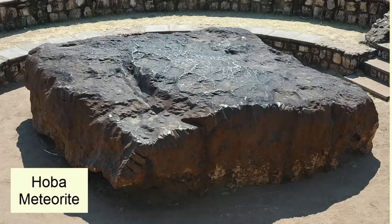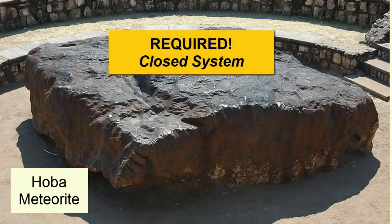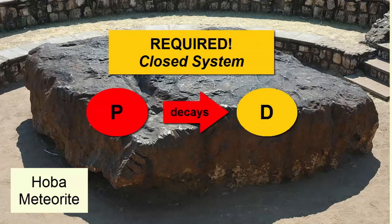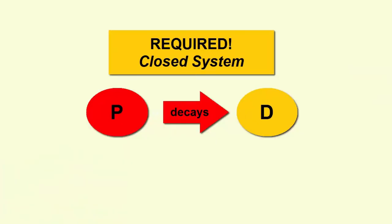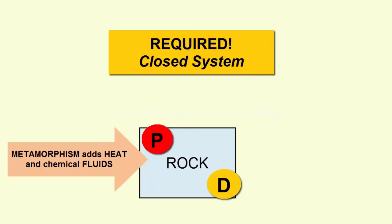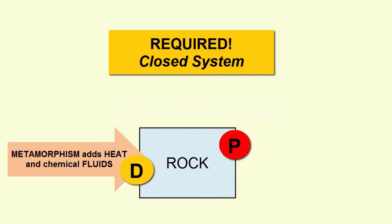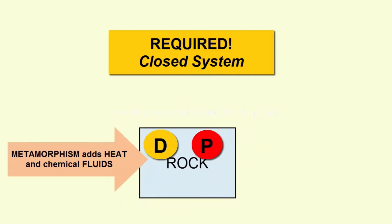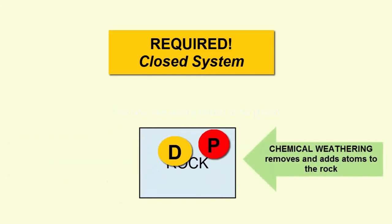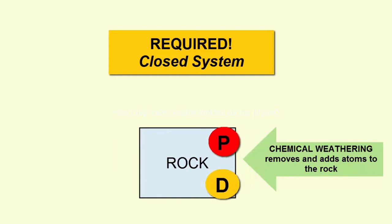Second step: we need to ensure the rock or shell or bone fragment has remained a closed system. While parent decays into daughter, there must be no migration of parent or daughter isotopes into or out of the rock. Otherwise, the ratios we see do not reflect decay over the lifetime of the rock. For example, if a rock has undergone extensive metamorphism at high heats, atoms become mobile within the rock and can migrate in and out. Similarly, if a rock undergoes chemical weathering on its surface, minerals can break down and atoms can migrate in and out.